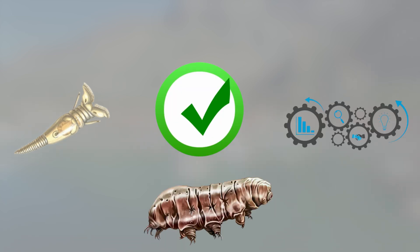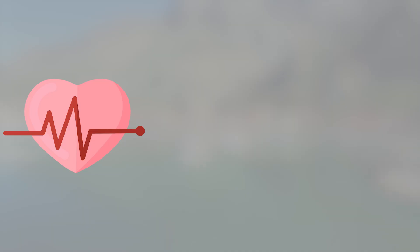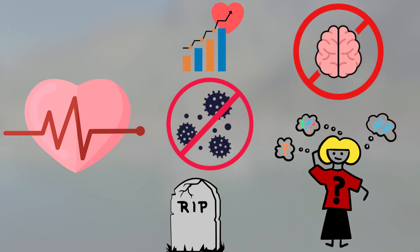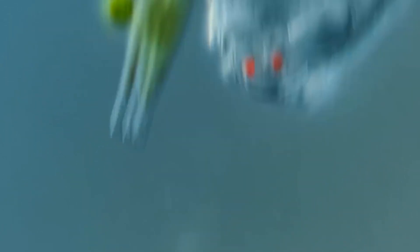This process is called cryptobiosis. Faced with lethal conditions, the rotifer drops its metabolism to near zero: no heartbeat, no movement, no brain signals. Not dead, not alive, just paused. And to survive that state, it rewires itself on a molecular level.